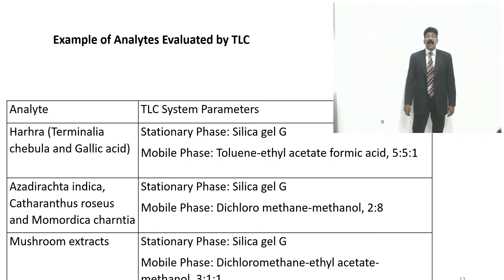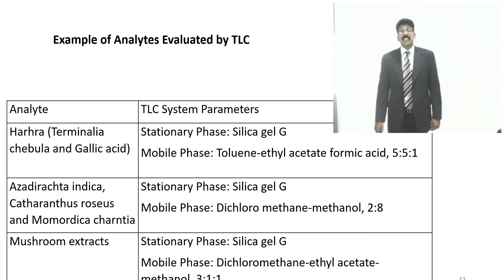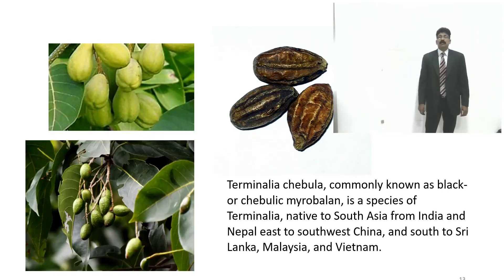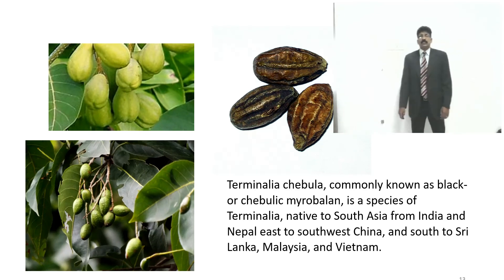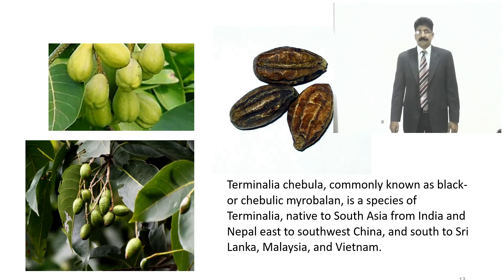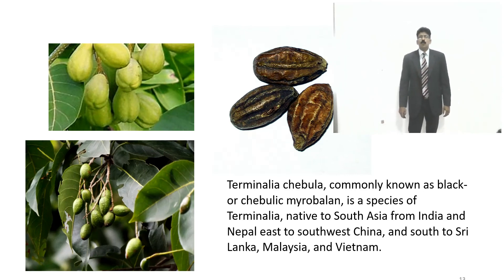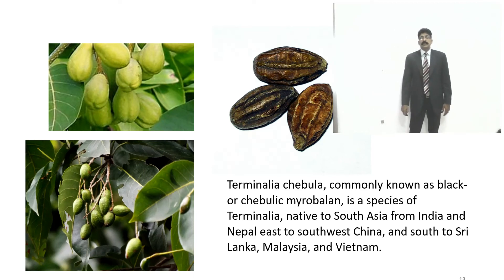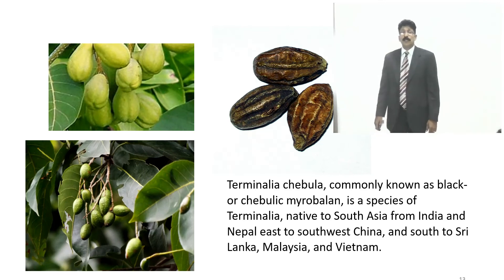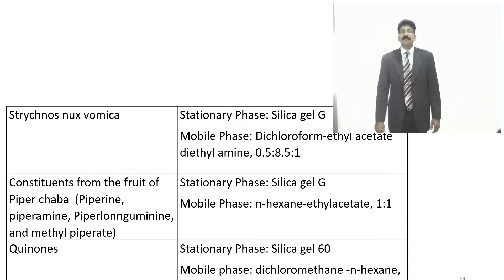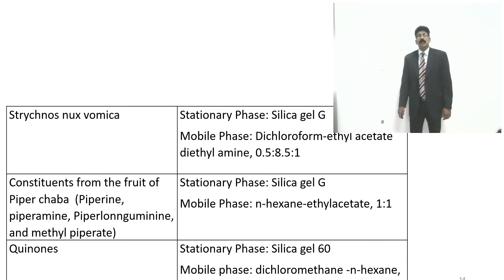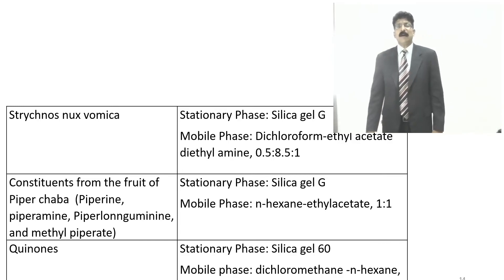Terminalia chebula is native to South Asia from India, Nepal, east to southwest China, south to Sri Lanka, Malaysia, and Vietnam. For Strychnos nux-vomica: stationary phase silica gel G, mobile phase dichloroform:ethyl acetate:diethylamine in ratio 0.5:8:5:1. For constituents of the fruit of Piper chaba — piperine, piperamide, piperlongumamide, and methyl piperate — stationary phase silica gel G, mobile phase dichloromethane and n-hexane in ratio 80:2.